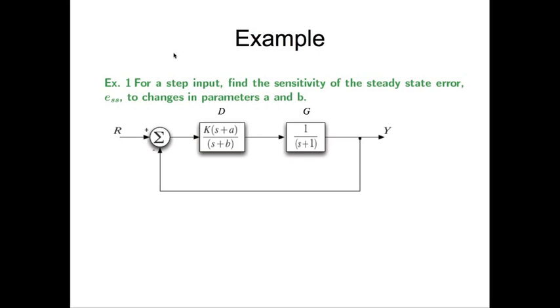Now, let's look at an example here. We are looking at a control system where you have a controller d, plant g, and there are three parameters here, k, a, and b. Now, we are asked to find the sensitivity of the steady state error, ess. Now, that's your function to changes in parameters in a and b. But actually, I'm going to do with respect to parameter k.